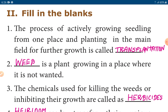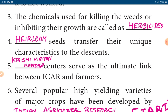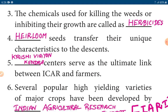Second one: Weed is a plant growing in a place where it is not wanted. Third one: The chemicals used for killing the weeds or inhibiting their growth are called herbicides.